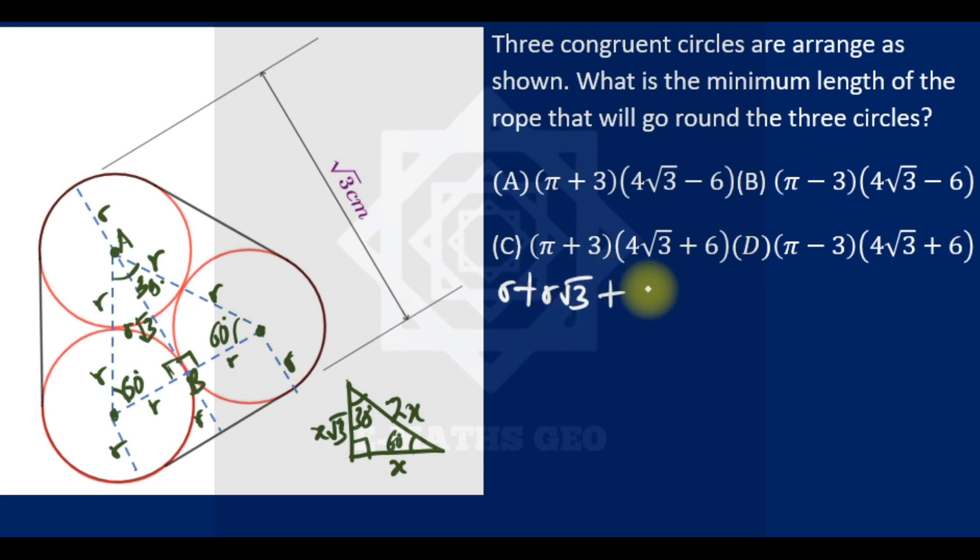As you can see, this total length here is the same as this. So this is R√3. This is 2R + R√3 is equal to √3.